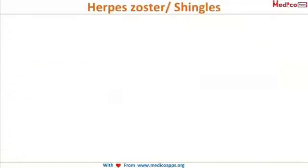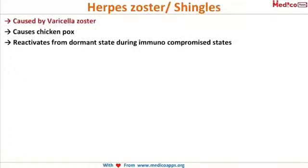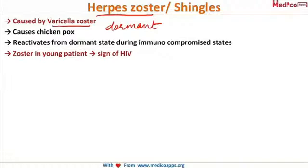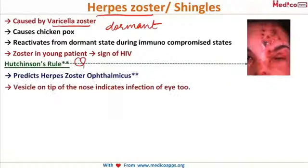Herpes zoster is the disease caused by the varicella zoster virus. It causes chickenpox when we are young, then remains dormant within the nerve roots. When there is immunological compromise, the virus reactivates. If herpes zoster occurs in a young patient, you should immediately suspect HIV, since cancer or chemotherapy patients are obviously immunocompromised but young patients showing zoster warrants HIV workup.